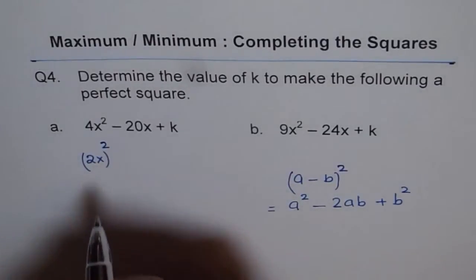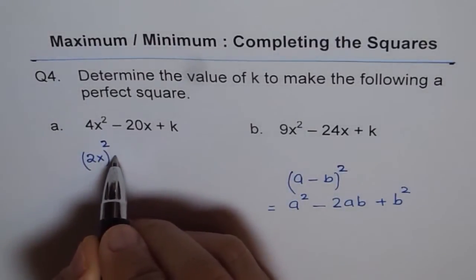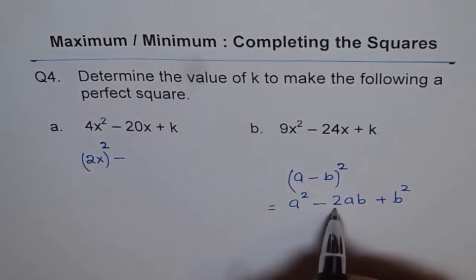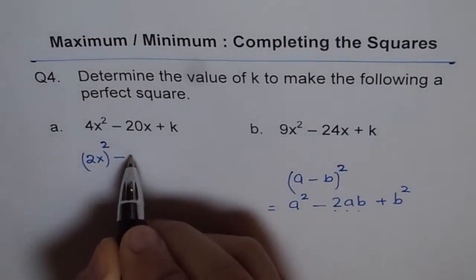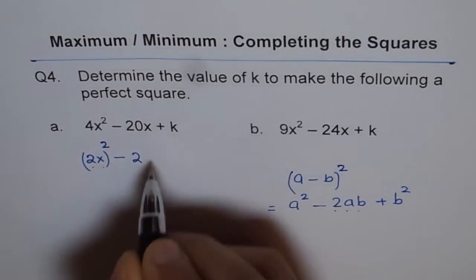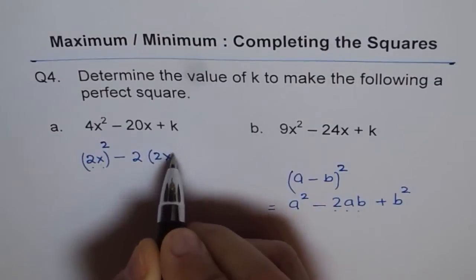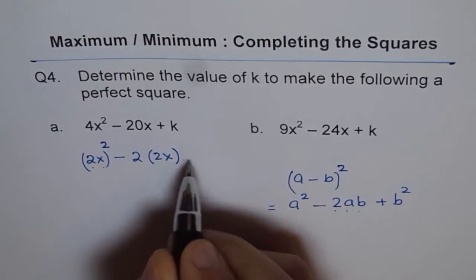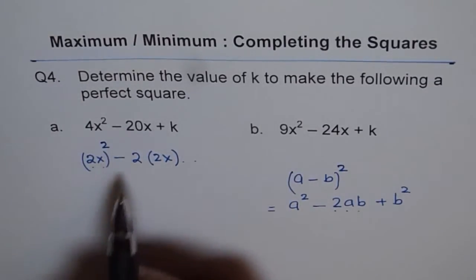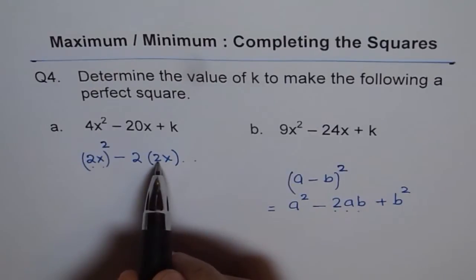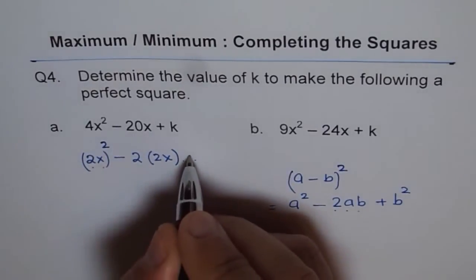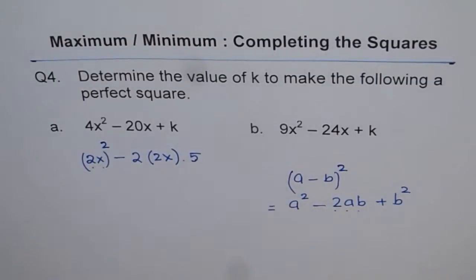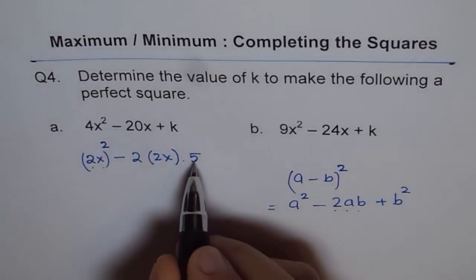Now the center term I have to write as minus 2 times A times B. So minus 2 times A is 2x for me. 2x. And B. So what should be B? 2 times 2 is 4 and this is 20. So B should be 5. So I get the value of B which is 5.